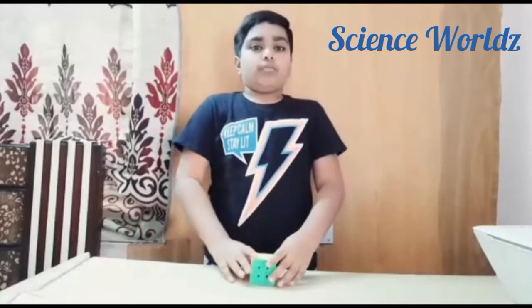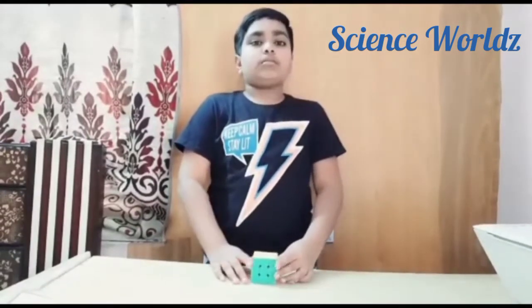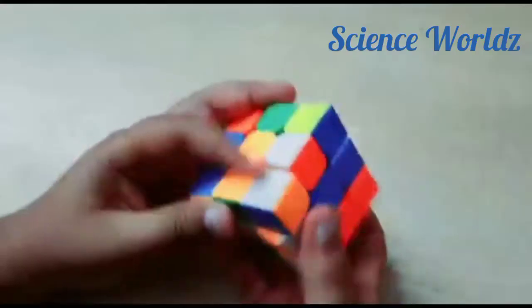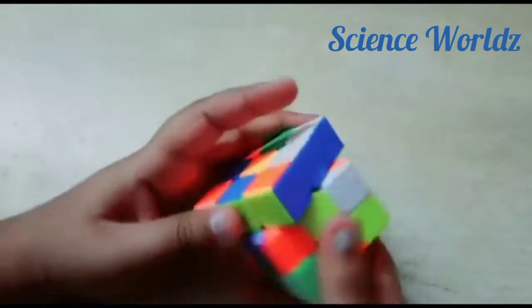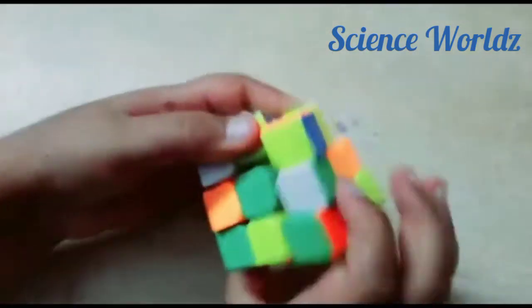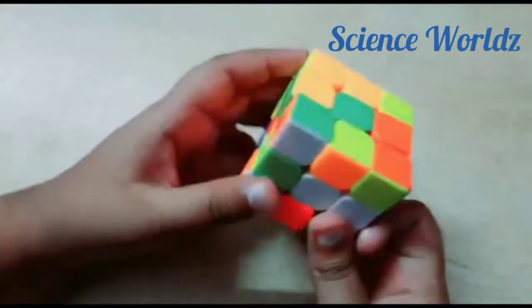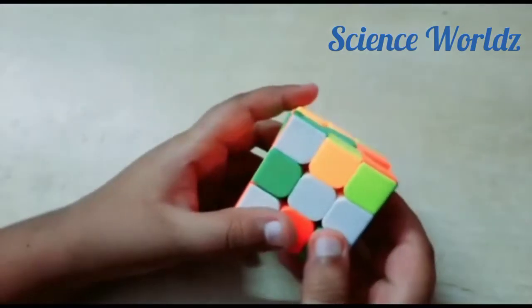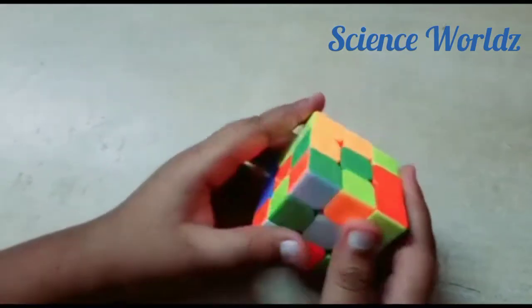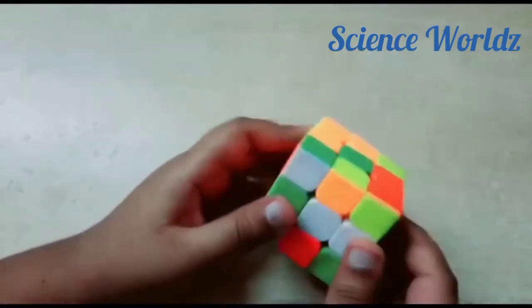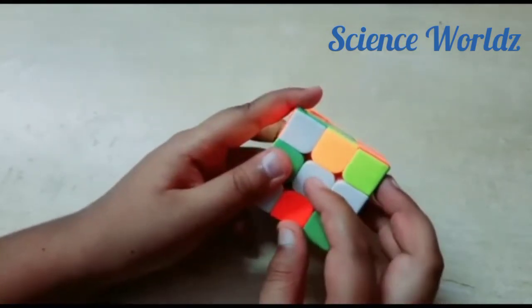Now, let's go with the solving of the cube. I have shuffled this cube properly. Now, let's start with the solving. First, we need to find any center piece. We have so many. I will always choose white.